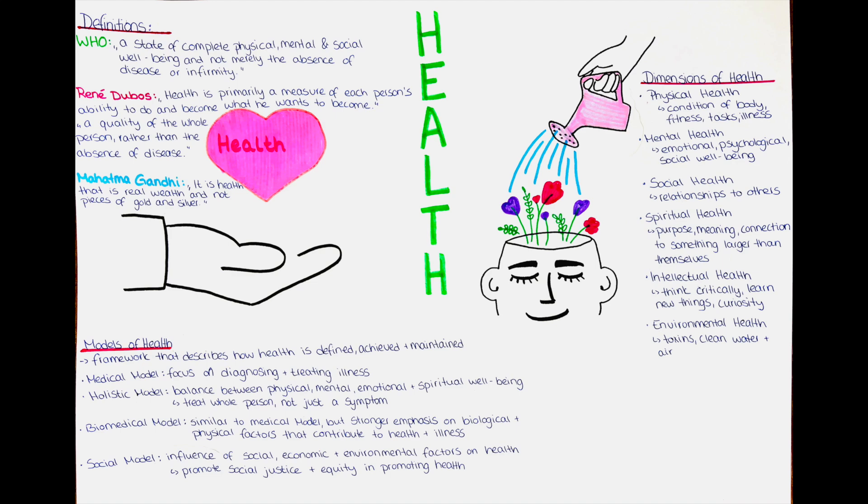This has led some to argue that a more narrow definition of health is needed, one that focuses on specific health outcomes or objectives. Another criticism of the WHO's definition is that it is too individualistic and does not take into account broader social determinants of health. The definition places a great deal of emphasis on personal behaviors and lifestyle choices, but does not acknowledge the role that social, economic and political factors play in shaping health outcomes. This can lead to an over-reliance on individual responsibility and blame for poor health, rather than addressing the structural and systemic issues that contribute to health disparities.